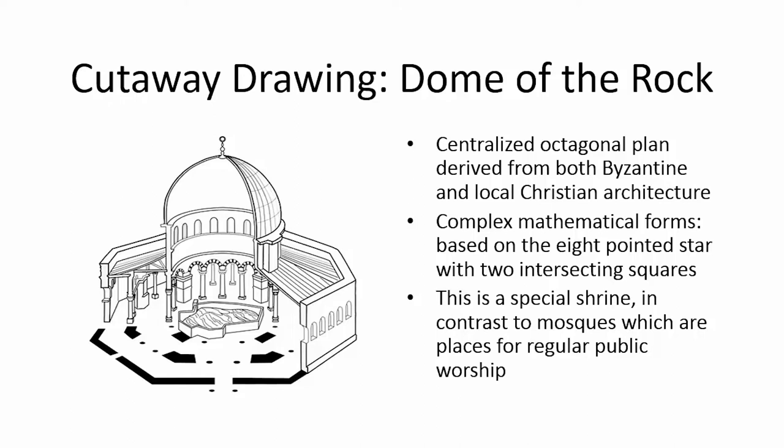We see this centralized octagonal plan. The Islamic architects use very complex math — not the sevens and threes of Christians, and they don't have a trinity. They use an eight-pointed star with two intersecting squares. This is a special shrine, not a mosque meant for regular public worship, so it doesn't have a mihrab or qibla wall. This is a shrine placed around a sacred place.